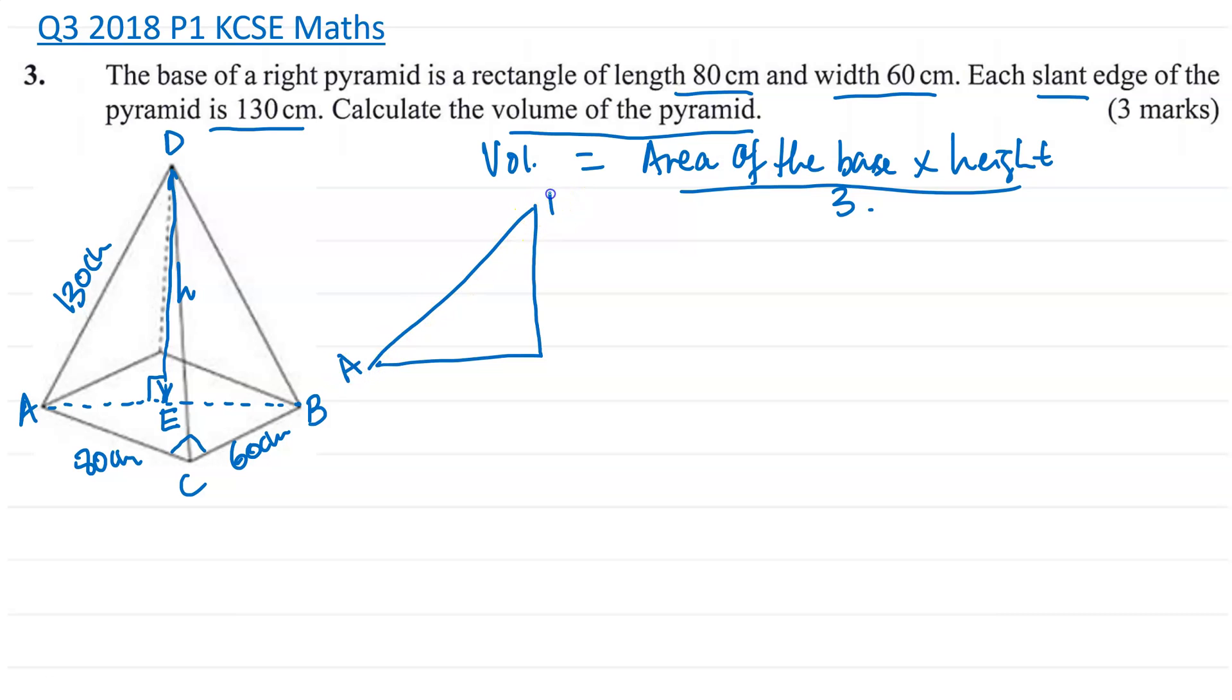This is A, this is B and this is C. And now we know AC is 80 centimeters. And we know BC is 60 centimeters. AB is what we're looking for so we can get AE.